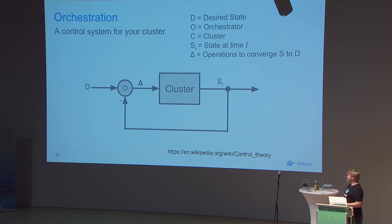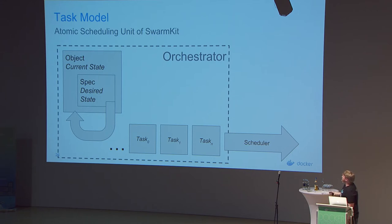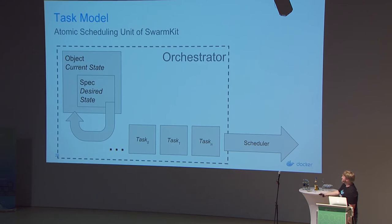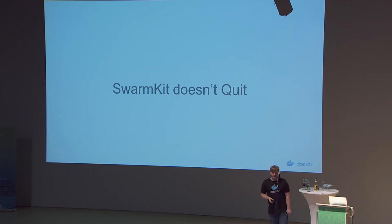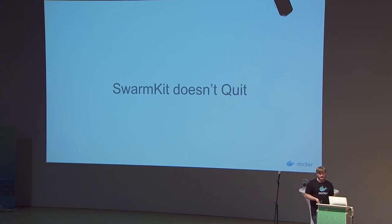Reviewing: we have our control system model that we can map our object model into. We can see the parallels between this feedback from the spec — the desired state, a highly observable user property — and how these tasks create the control for your cluster. SwarmKit doesn't quit — it's a reconciliation system. Things don't error out, they're just never converged, and this data model is a great thing to build cluster control systems on top of.